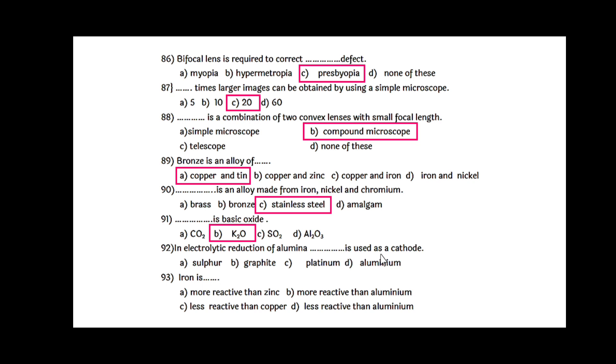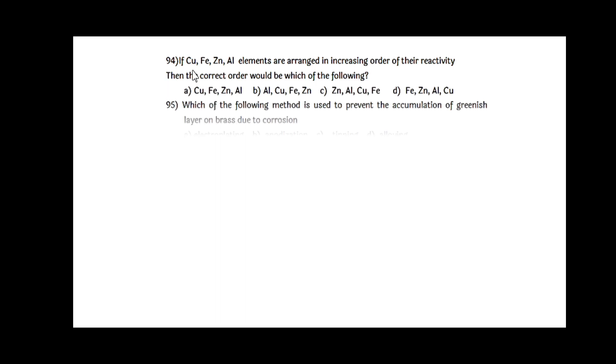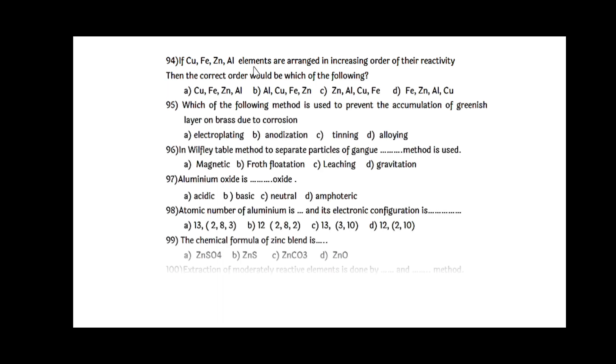Iron is less reactive than aluminum. If copper, iron, zinc, aluminum elements are arranged in increasing order of their reactivity, the first option itself is correct because it's given in the correct order. Which method is used to prevent the accumulation of greenish layer on brass due to corrosion - that is tinning.